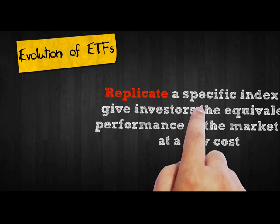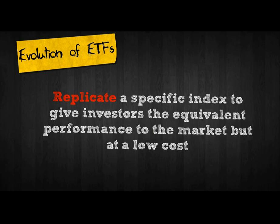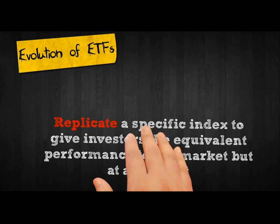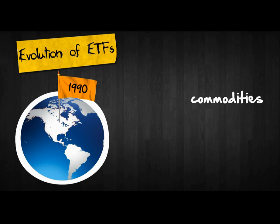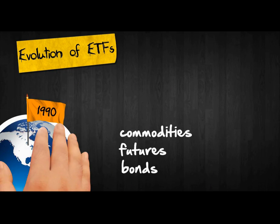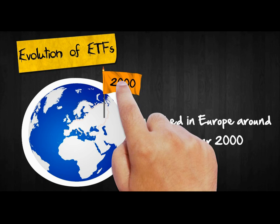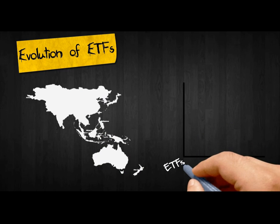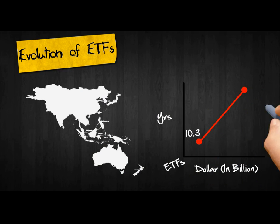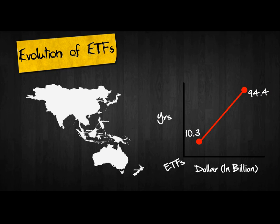The desire to replicate a specific index to give investors the equivalent performance to the market, but at a low cost, saw the creation and launch of the first ever ETF. The first ETFs were listed in the U.S. in the early to mid-1990s. The ETF sector expanded to include commodities, futures, and bonds. After they were launched in Europe around the year 2000 and synthetic ETFs were created, the product came to Asia. Across Asia-Pacific, ETF assets have grown from US$10.3 billion in 2001 to more than US$90 billion at the end of 2011.